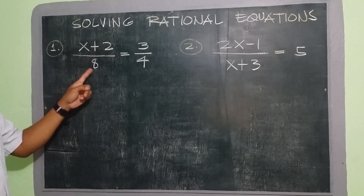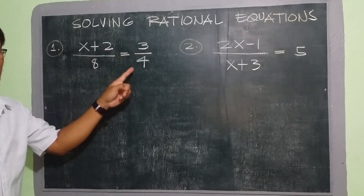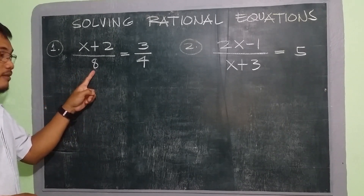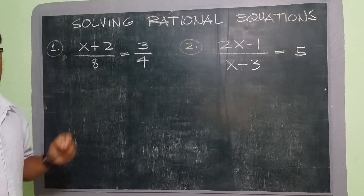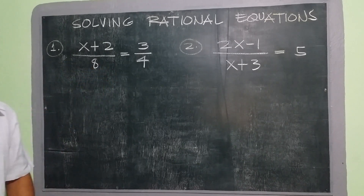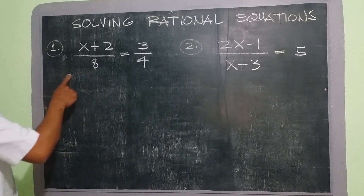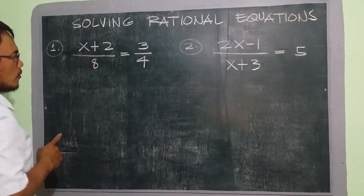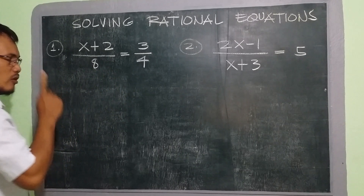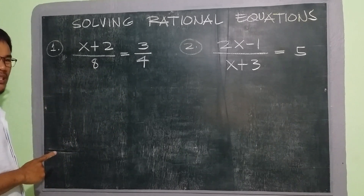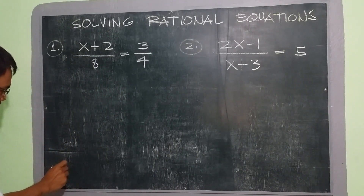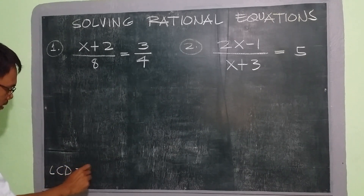We have x plus 2 over 8 is equal to 3 over 4. In this case, we have our denominators 8 and 4. Now in order to solve this one, we need to find first our LCD. Our LCD for this example, since we have the denominators 8 and 4, is 8. So our LCD for example number one is 8.